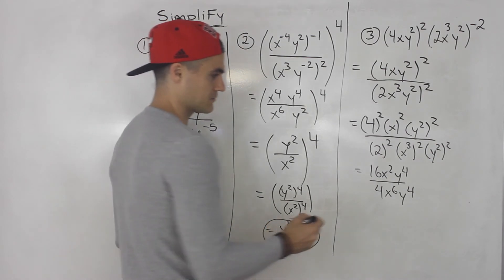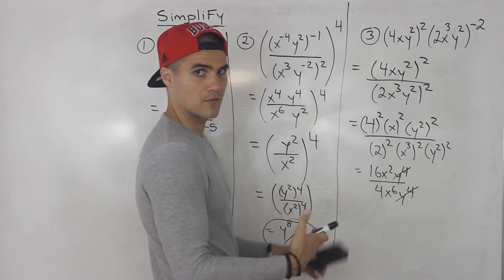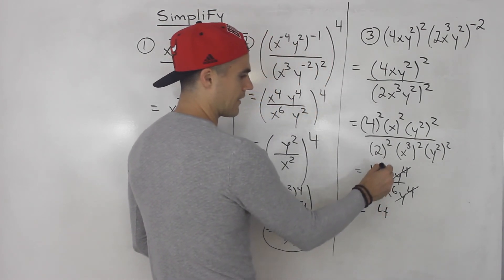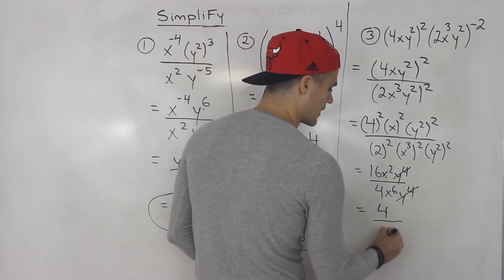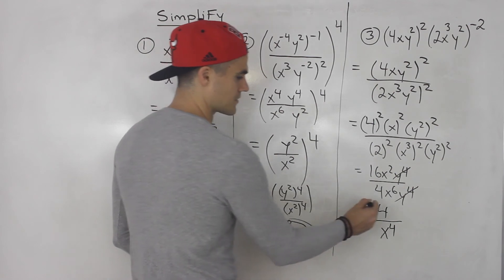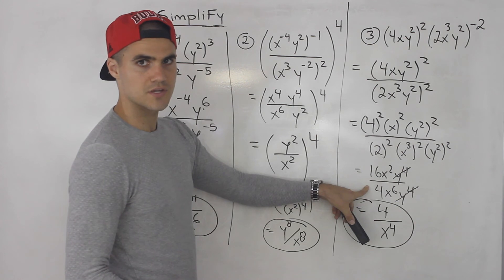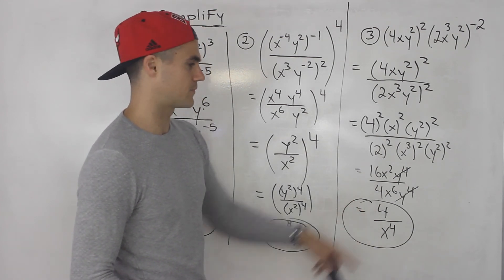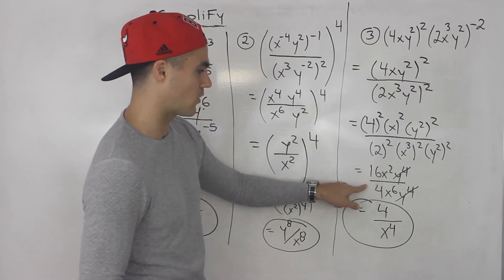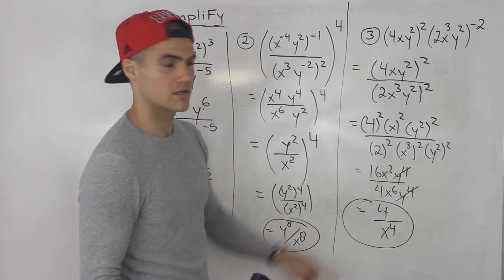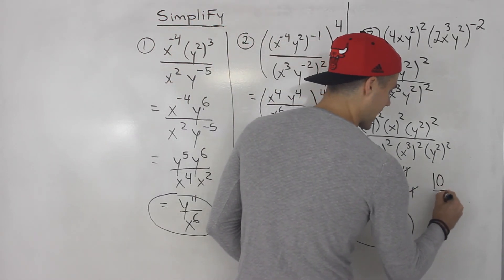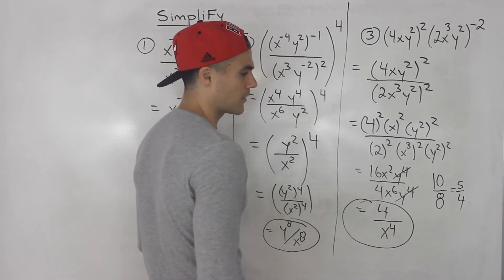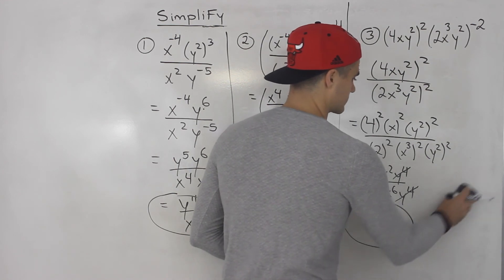From here we can simplify. The y to the fourth terms cancel out — four minus four is zero, and y to the zero is just one. Then 16 over 4 gives us 4 in the numerator. We have 2 x's on top and 6 on the bottom, leaving 4 x's on the bottom. So the final answer is 4 over x to the fourth. Just be careful: if it had been 4 over 16 instead, that would simplify to 1 over 4, giving 1 over 4x to the fourth. Or if you had something like 10 over 8, that simplifies to 5 over 4. So be careful with these coefficients — you're basically just simplifying a fraction.